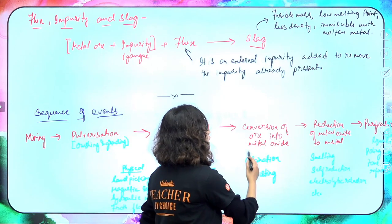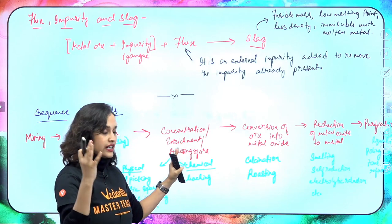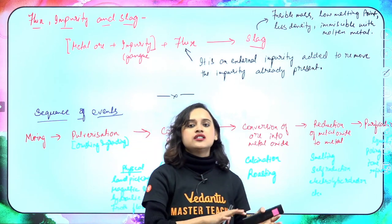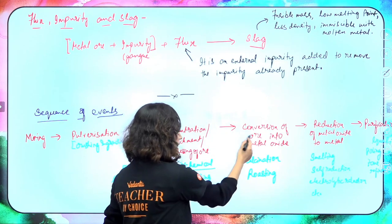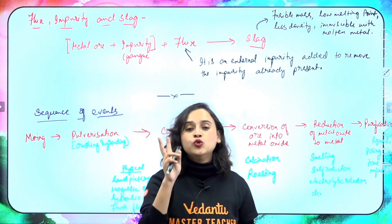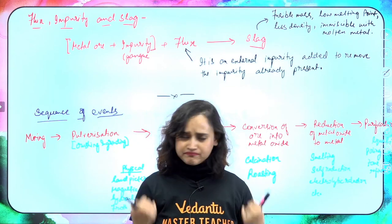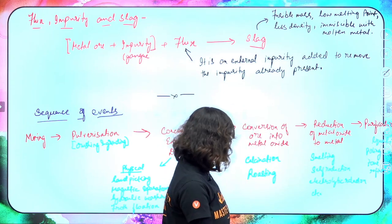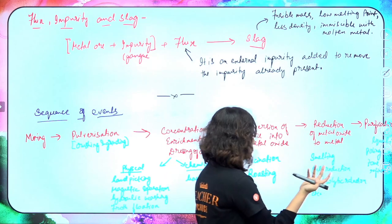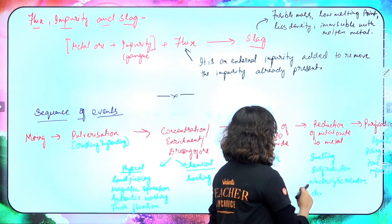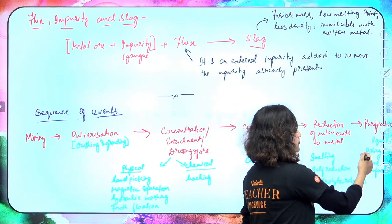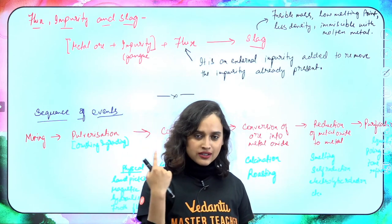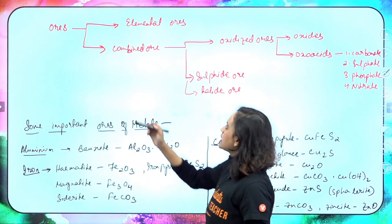Moving on — conversion of ore into metal oxide. Now that we have the concentrated ore, we convert it into metal oxide because once we have the metal oxide, it's easy to remove the oxygen part and get our metal. For this we have the two very famous words: calcination and roasting. After that, we reduce the metal oxide to metal through processes like smelting, self-reduction, and electrolytic reduction. Finally, purification involves liquation, poling, zone refining, and electrolytic refining.